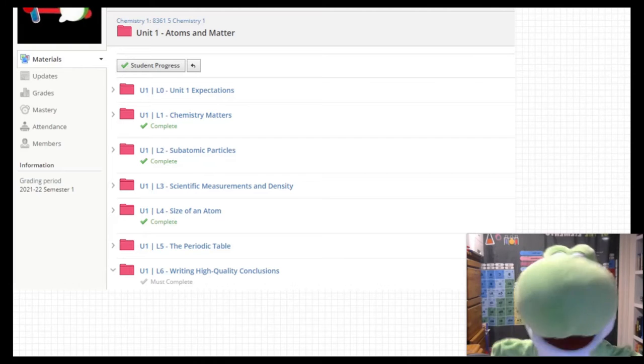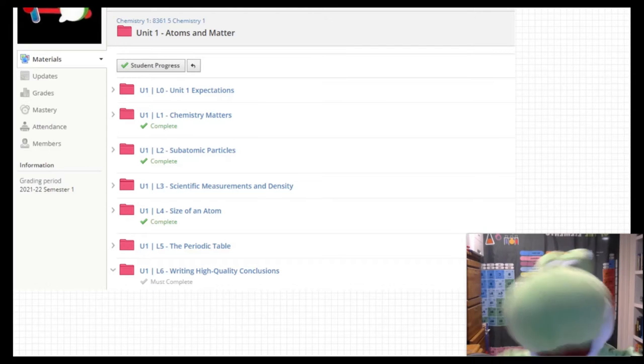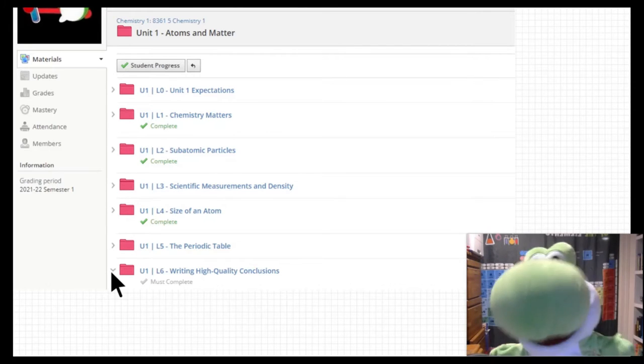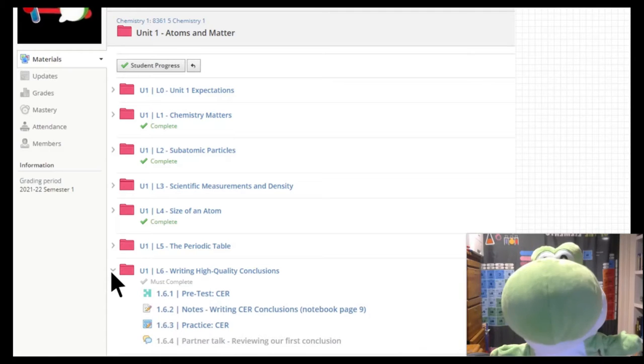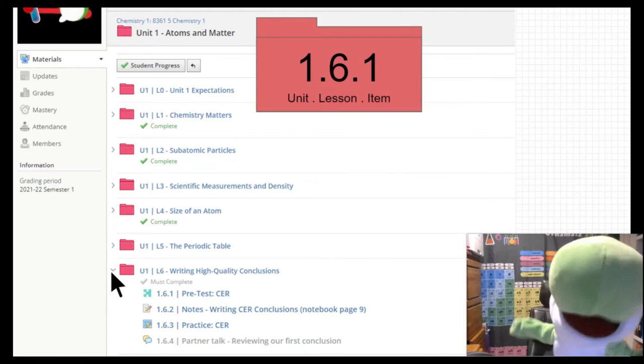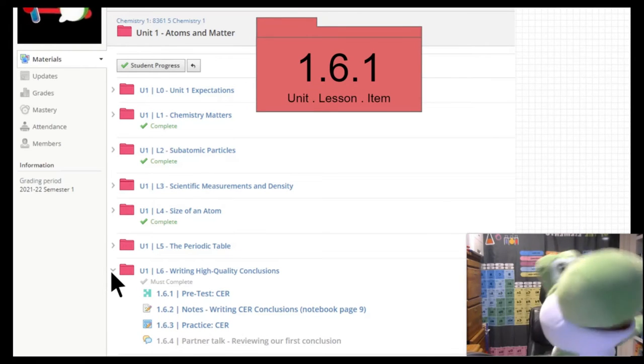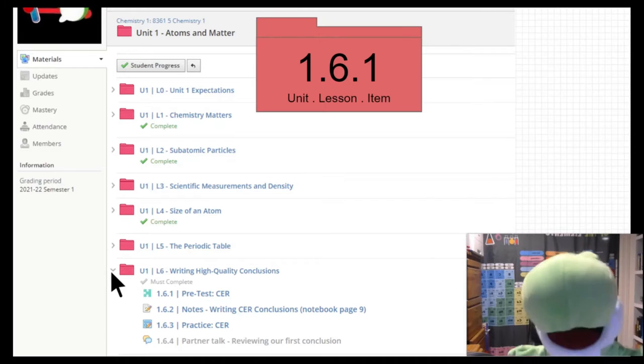Here's an example of a unit folder. It's full of many lessons that we'll do over a long period of time, many weeks. In each of these folders, if you click them open, you're going to see a few items. You might notice that each of the items have certain numbers. This is telling you a little bit about that item and where it's found.